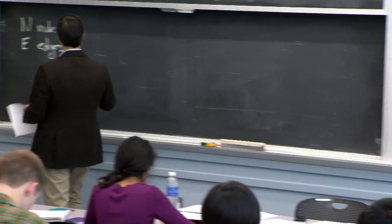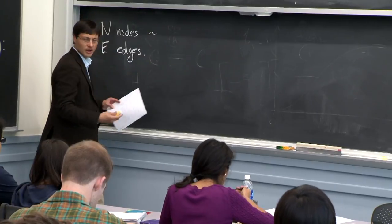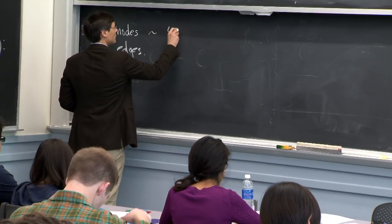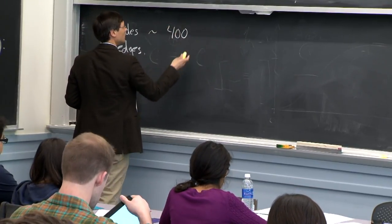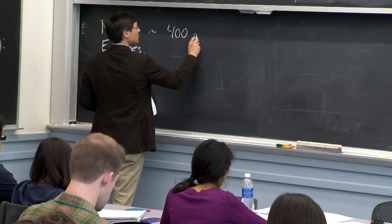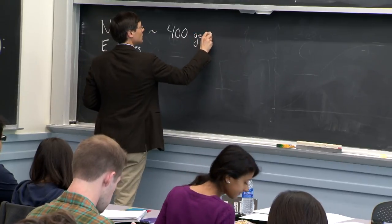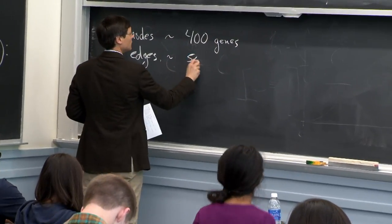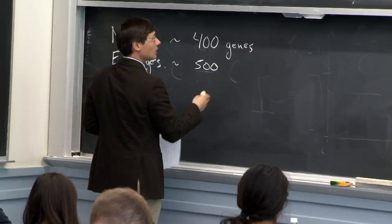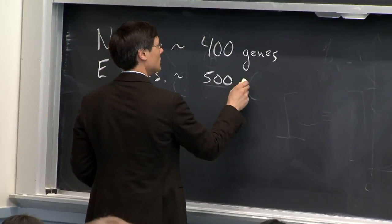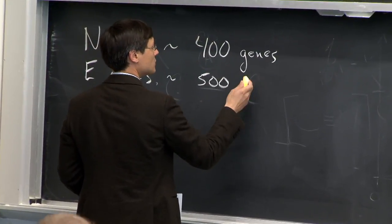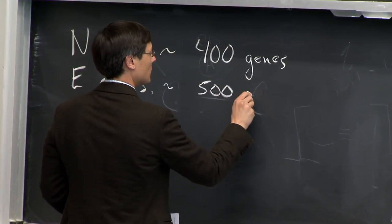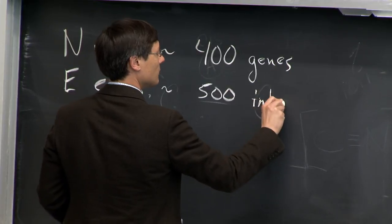In the network we talk about a lot, there were around 400 genes or proteins and around 500 observed edges — these are interactions or regulatory relationships.